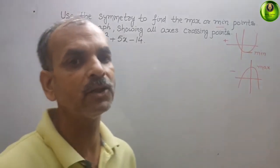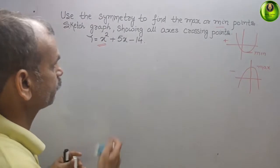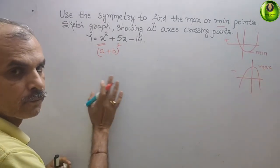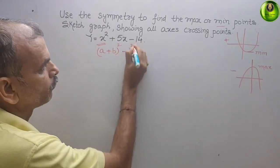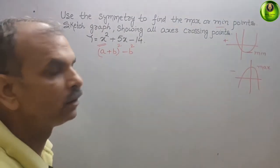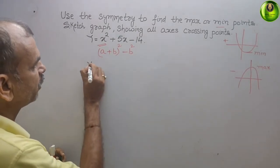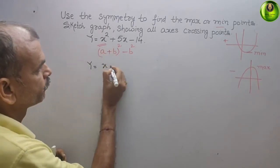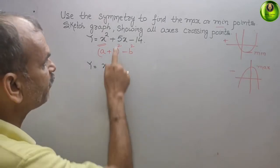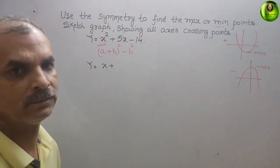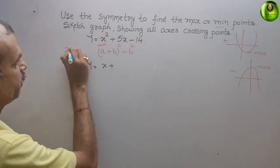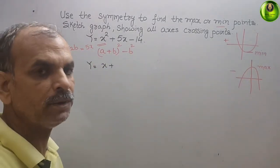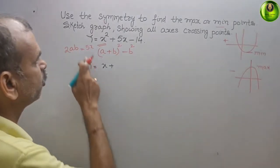Since the second term is positive, we use (a + b)² minus b². We will get y equal to — here 'a' is x. Now 5x is your 2ab term. If you expand (a + b)² you get a² + b² + 2ab, and that 2ab is your middle term, which is 5x.